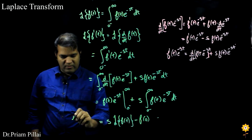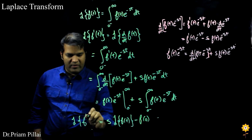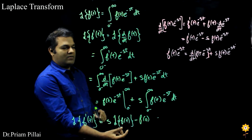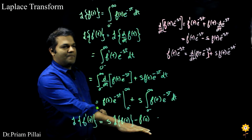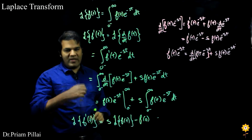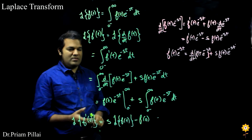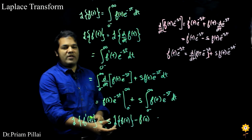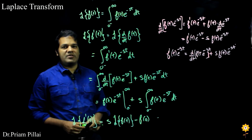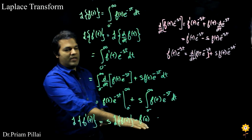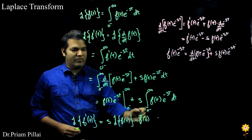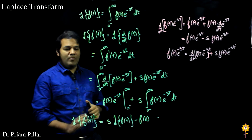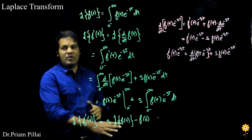The Laplace transform of the derivative of a function is s multiplied by the Laplace transform of the function minus the initial condition f of 0. This is very important: the Laplace transform of derivative expressions turns them into an algebraic expression with an offset of the initial conditions. If our initial conditions are zero, the Laplace transform of the derivative is simply s multiplied by the Laplace transform of the original function.